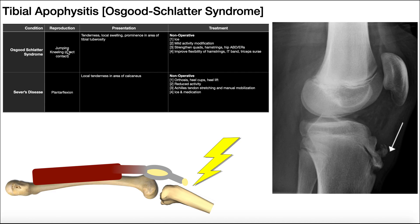What's going to reproduce the pain is anything that utilizes the extensor mechanism with a lot of force — things like jumping, squatting, and kneeling. Kneeling on shins puts the tibial tuberosity in direct contact with the ground under the person's weight, which also reproduces pain. Management is non-operative conservative care unless there's an avulsion. Ice is used to cool down inflammation, along with activity modifications. Strengthening of the quadriceps, hamstrings, hip abductors, and external rotators is recommended, but with lighter exercises that don't aggravate the tuberosity. Flexibility work targets the hamstrings, tensor fasciae latae, and triceps surae — the gastroc and soleus.